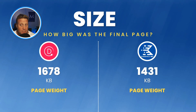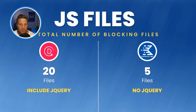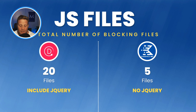When it comes to page size — how big was the final page size? Divi was 1,678 kilobytes, which was about 200 kilobytes more than Cadence WP at 1,431 kilobytes. That largely comes down to the number of JavaScript files with Divi. Divi has a lot of blocking JavaScript because it requires jQuery, and that means it has 20 files — a lot compared to the five files we have with Cadence WP.